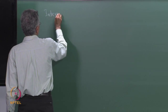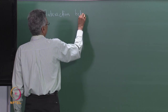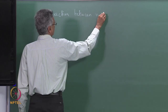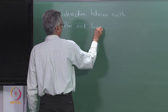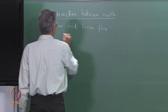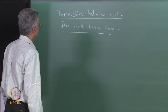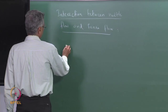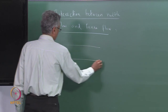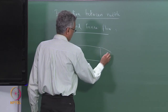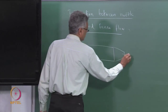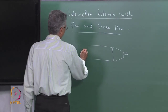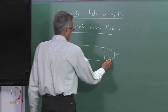In the previous class, we looked at the interaction between nozzle flow and Fanno flow. Under this category, we looked at two situations: one when a convergent nozzle is located downstream of a pipe or duct. So we had flow coming in and going out — Fanno flow in the pipe section and isentropic flow in the nozzle section.